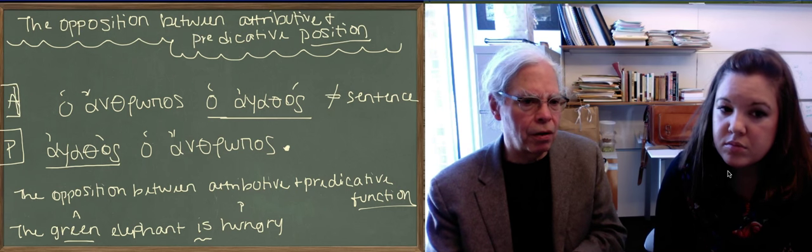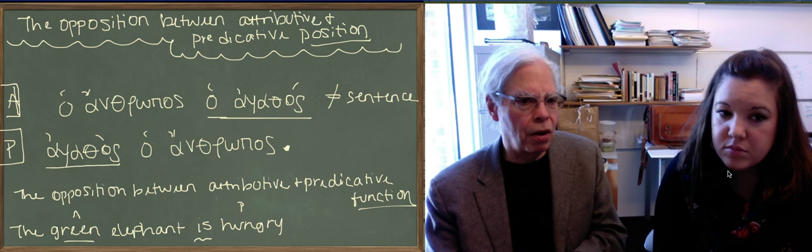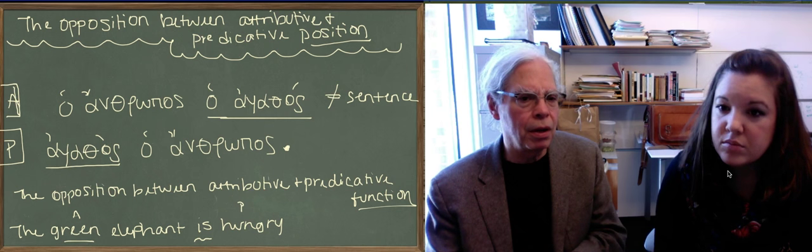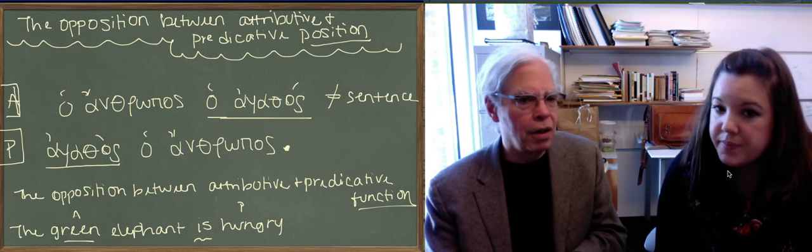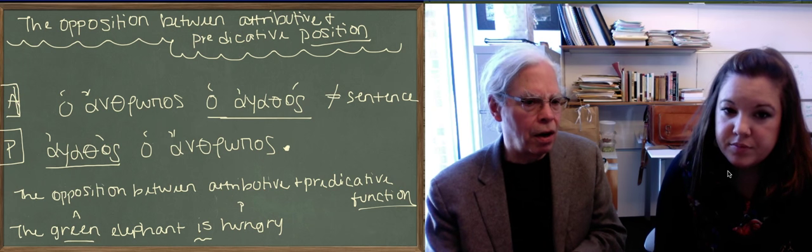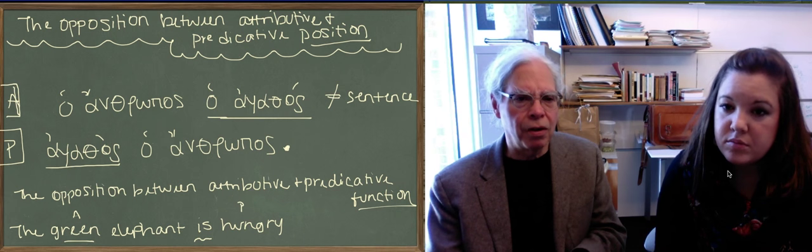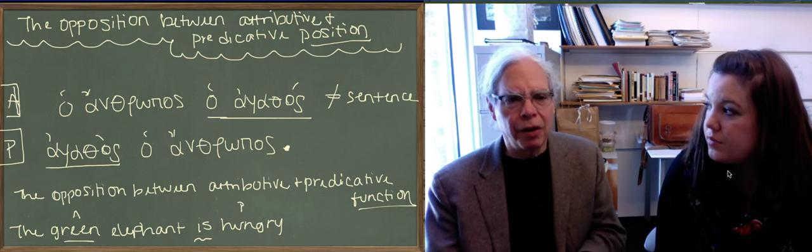In order to make agathos be an attribute of anthropos, you'd have to repeat the article or you'd have to put it after the ha. In other words, you could say ha-agathos anthropos, that would still not be a sentence, that would mean "the good human being." Or you'd have to say ha-anthropos ha-agathos. You could also do anthropos ha-agathos. That would still mean "a good human being" because the attribute agathos is still following the article that agrees with the noun.